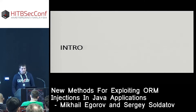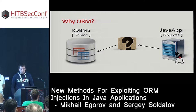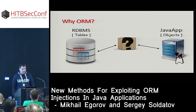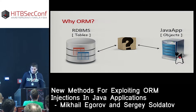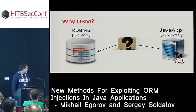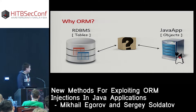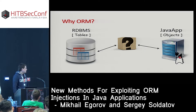ORM stands for Object-Relational Mapping. It's a programming technique for converting data between relational databases and object-oriented programming languages. ORM sits in the middle between the database management system and the Java application. ORM communicates with the database management system, fetches data from tables, and automatically converts this data into Java objects.